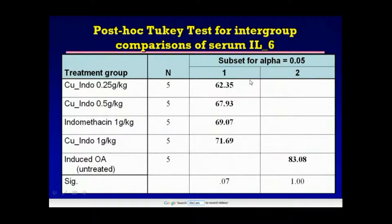This table shows the same effect on the level of interleukin-6. The group treated with the lowest dose of copper indomethacin also showed the highest reduction in serum interleukin-6, as did the group treated with 0.5 g/kg. All treatment arms showed significantly higher reduction than the untreated group.